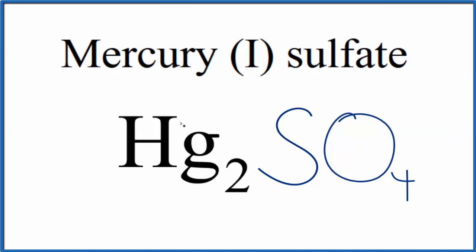So this is the formula for mercury(I) sulfate: Hg₂SO₄. This is Dr. B, and thanks for watching.